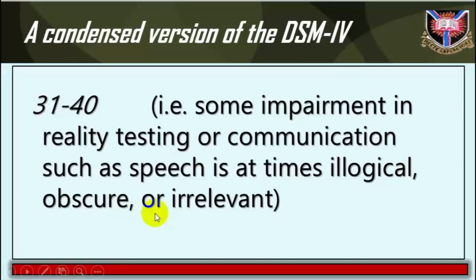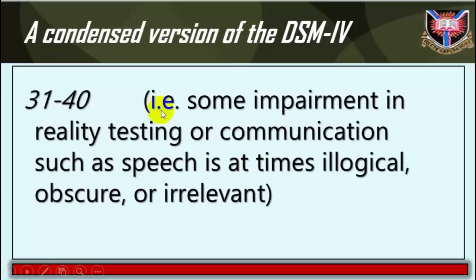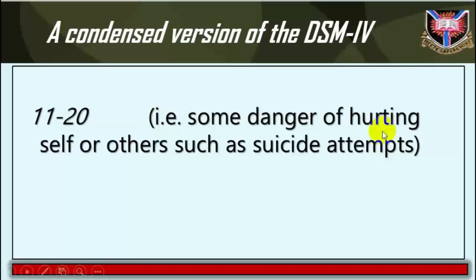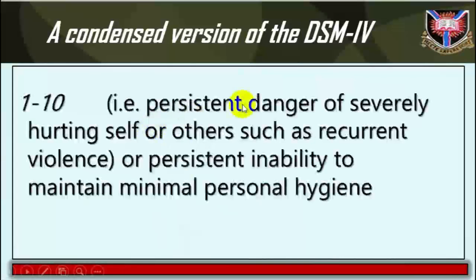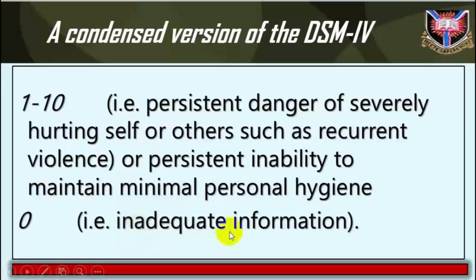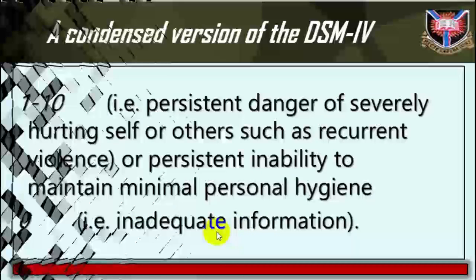21–30 indicates behavior that is considerably influenced by delusions or hallucinations. 11–20 indicates some danger of hurting self or others, such as suicide attempts. 1–10 indicates persistent danger of severely hurting self or others, such as recurrent violence or persistent inability to maintain minimal personal hygiene. 0 indicates inadequate information.